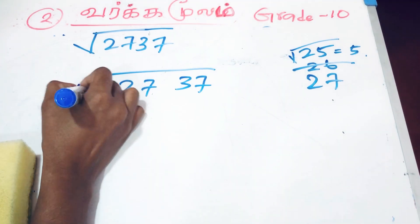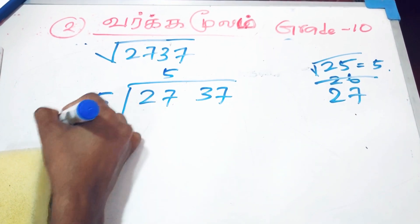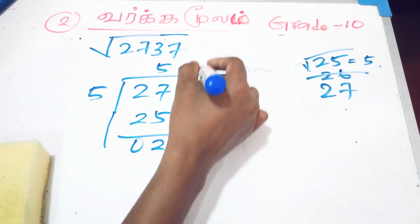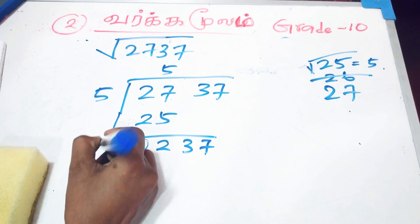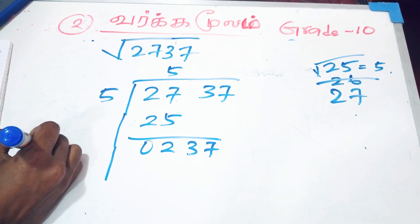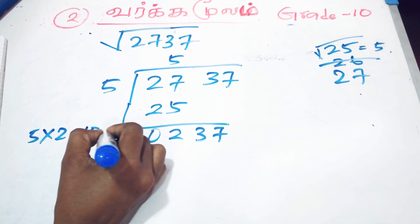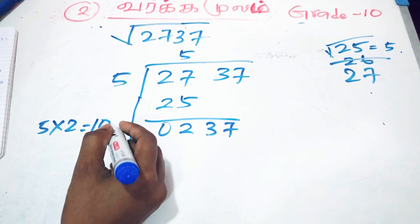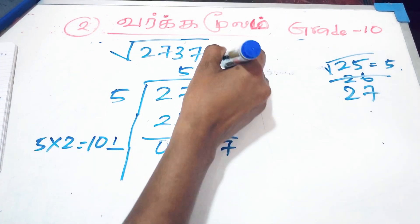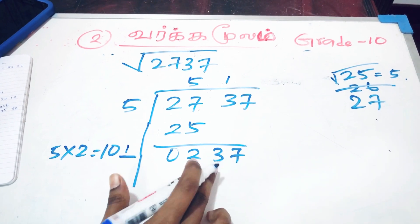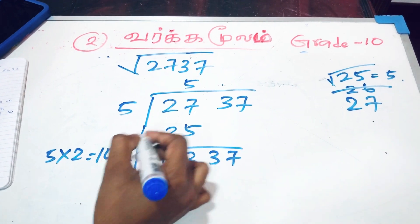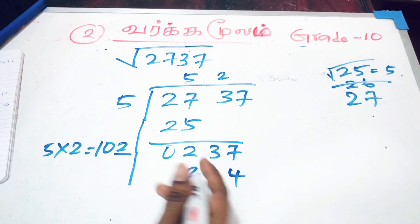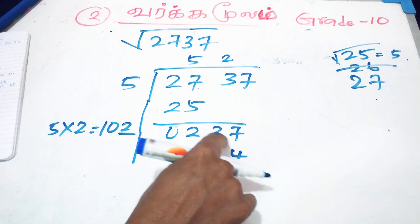5, 5 is here. 5 is here. Minus 2, 30. 30, 30, 30. 40, 30. 3 is equal to 3. Then we will divide the 3 and the 2.